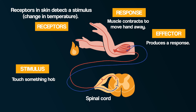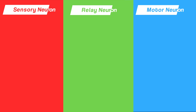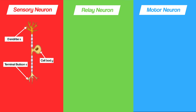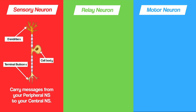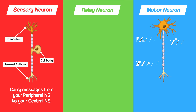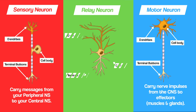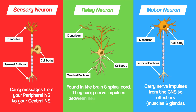This is where the different types of neuron come in. You need to know the function of sensory, relay, and motor neurons. Sensory neurons carry messages from the peripheral nervous system to the central nervous system. Motor neurons carry nerve impulses from the central nervous system to effectors such as muscles and glands. Relay neurons are found in the brain and spinal cord and carry nerve impulses between neurons, connecting sensory and motor neurons.